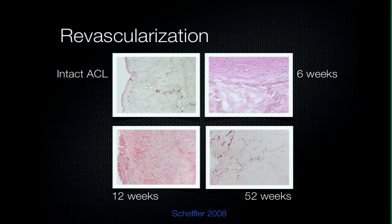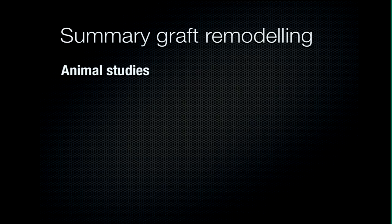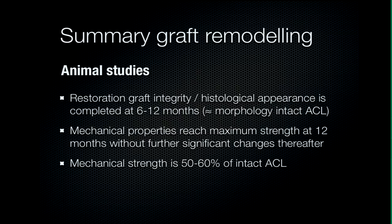Here's an example of revascularization. The top left shows the intact ACL with specific coloring techniques for vascular structures. The proliferation phases at six weeks and twelve weeks show intense revascularization. Then vascularity diminishes and becomes somewhat similar to what the intact ACL looks like after one year. In summary, what do we know about graft remodeling in animal studies? There's a restoration of graft integrity and histological appearance at six to twelve months, and the morphology is quite similar to the intact ACL. Mechanical properties reach maximum strength at 12 months with no change thereafter, but are only 50–60% of an intact ACL.